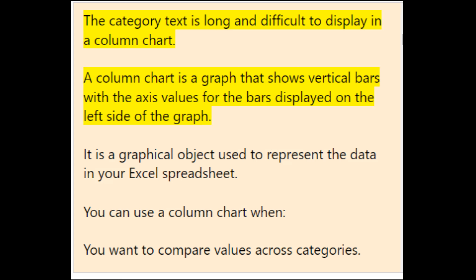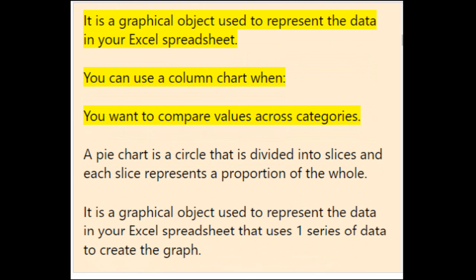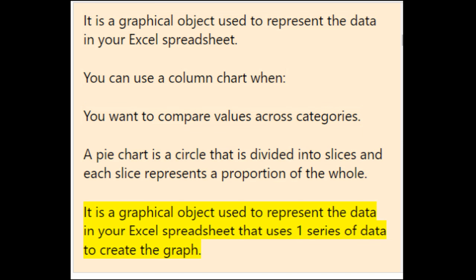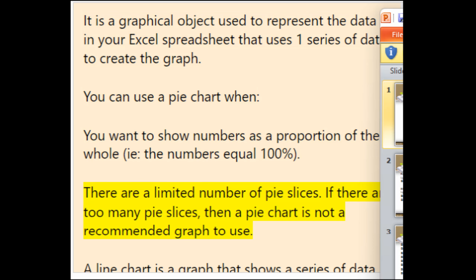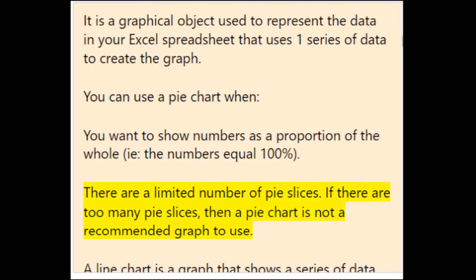A column chart shows vertical bars with axis values on the left side, used to compare values across categories. A pie chart is a circle divided into slices where each slice represents a proportion of the whole, using one series of data. Use a pie chart when you want to show numbers as a proportion of the whole (i.e., numbers equal 100%). There should be a limited number of pie slices — if there are too many, a pie chart is not recommended.